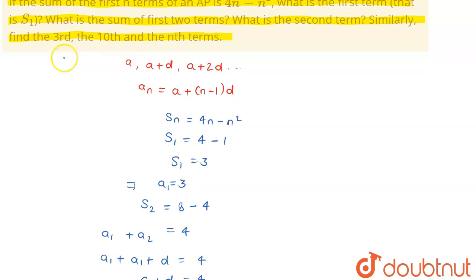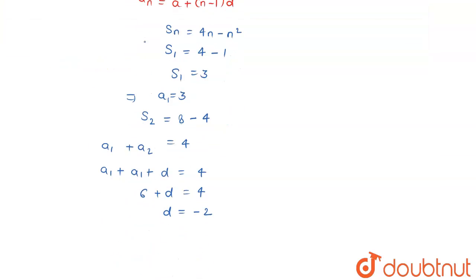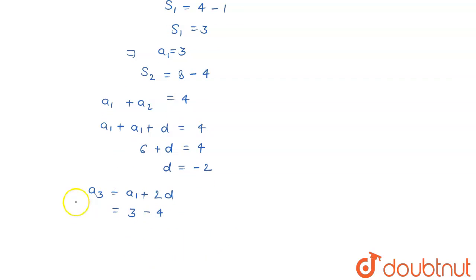I'm required to find out the third, tenth, and nth term. Now third term will be a3 is going to be a1 plus (3 minus 1) that is 2 into d. The value of my a1 is 3 and d is minus 2, so it becomes minus 4, or I can say my third term is minus 1.